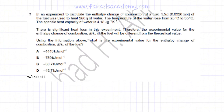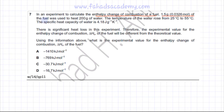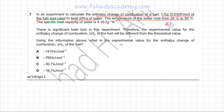The following question deals with calculating experimentally the enthalpy change of a reaction. In an experiment to calculate the enthalpy change of combustion of a fuel, 1.5 grams or 0.0326 moles of the fuel was used to heat 200 grams of water. The temperature of the water rose from 25 to 55 degrees centigrade, which means the change in temperature is 30 degrees centigrade.